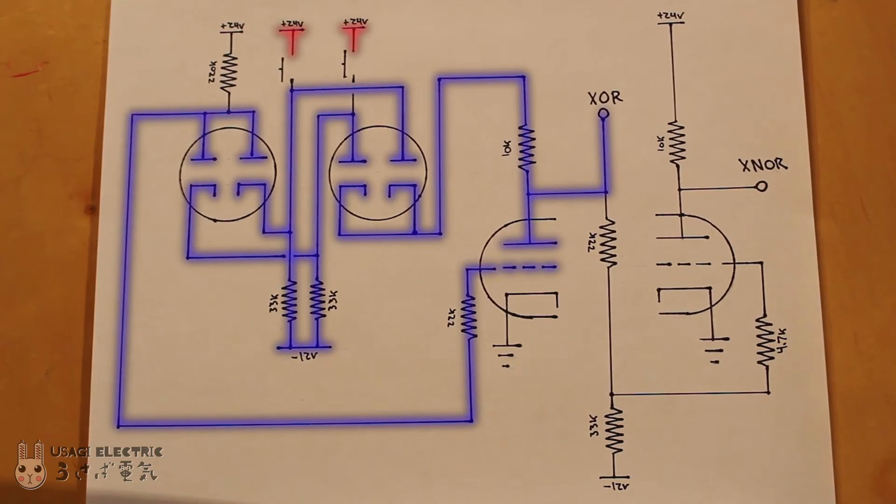the grid and plate are pulled low via the resistors to negative 12 volts. When one button is pressed, the grid remains low but the plate is pulled high, giving a high output.